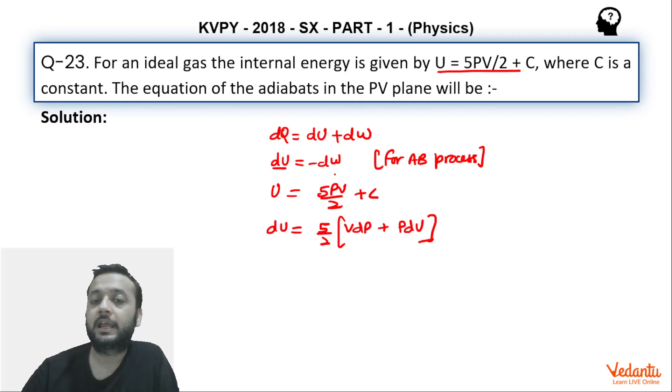So what I am going to do, I am going to put the value of dU in this equation and dW I am going to write minus PdV. So what do we get? 5/2 VdP plus 5/2 PdV is equals to minus PdV, right.